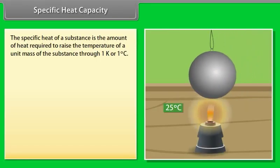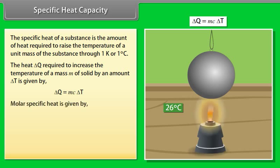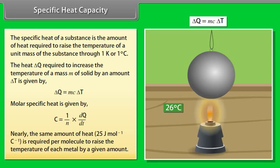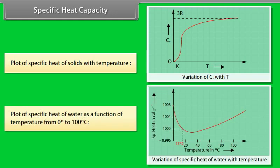The specific heat of a substance is the amount of heat required to raise the temperature of a unit mass through 1 Kelvin or 1 degree Celsius. The heat delta Q required to increase the temperature of mass M of a solid by delta T is given by delta Q = MC delta T. Molar specific heat is given by C = (1/N) dQ/dT. Nearly 25 Joule per mole per Celsius is required to raise the temperature of each metal by a given amount. Variation of specific heat with temperature and the specific heat of water from 0 to 100 degrees Celsius are shown in graphs.